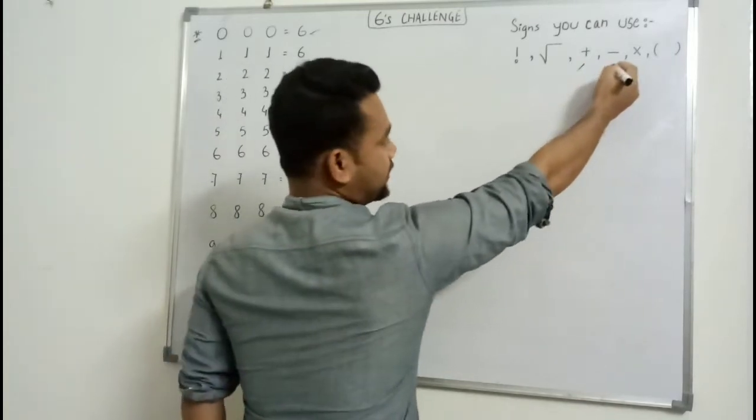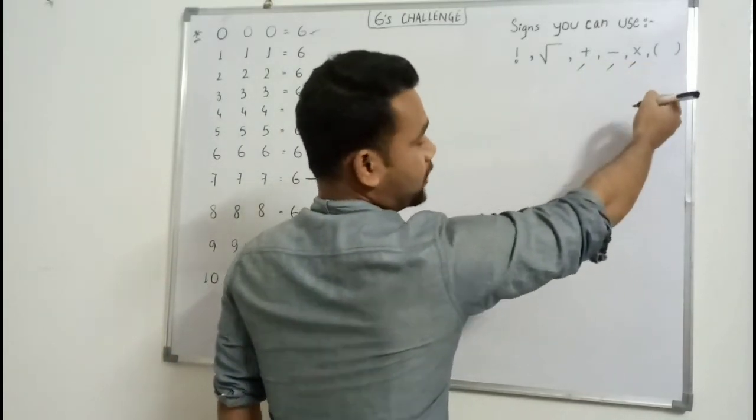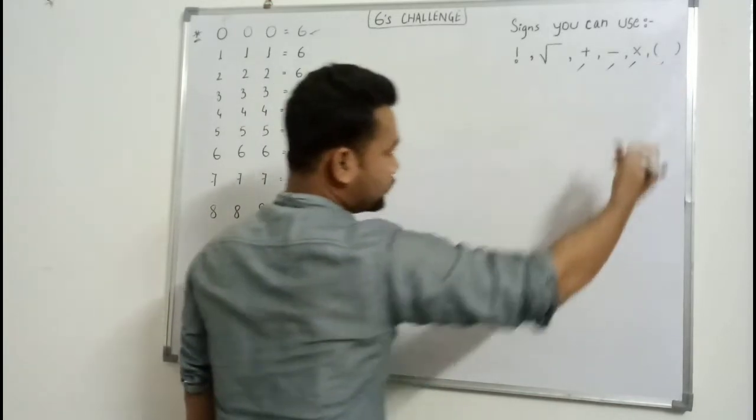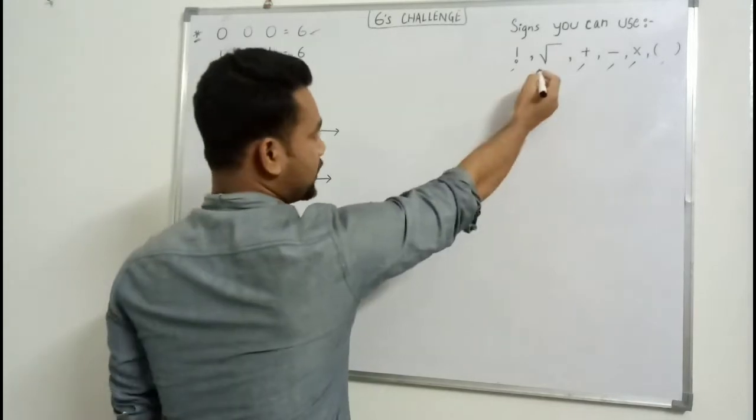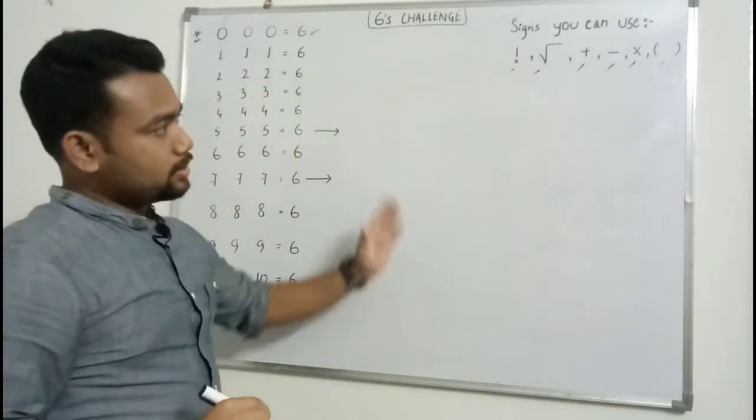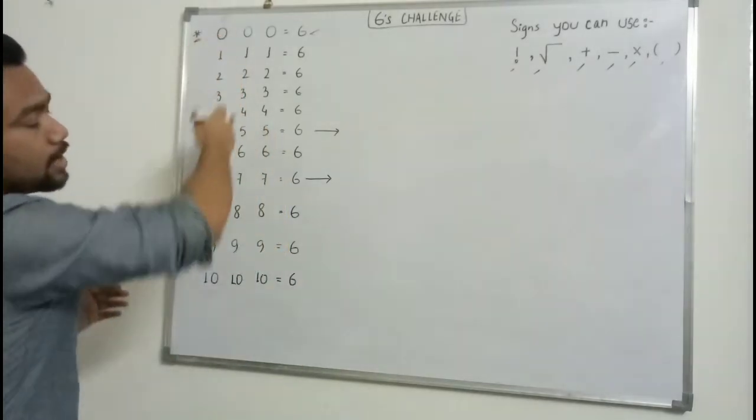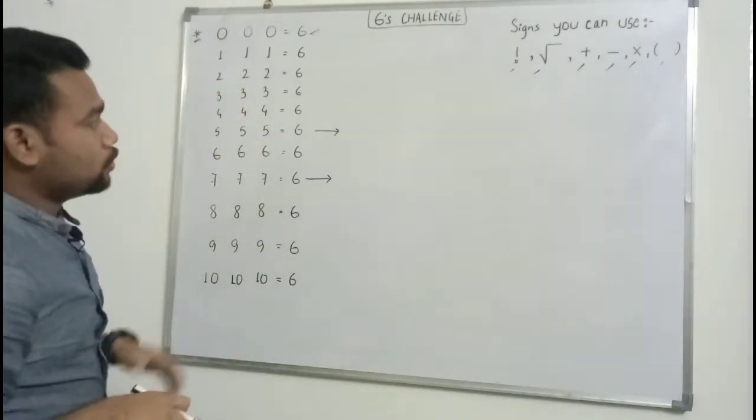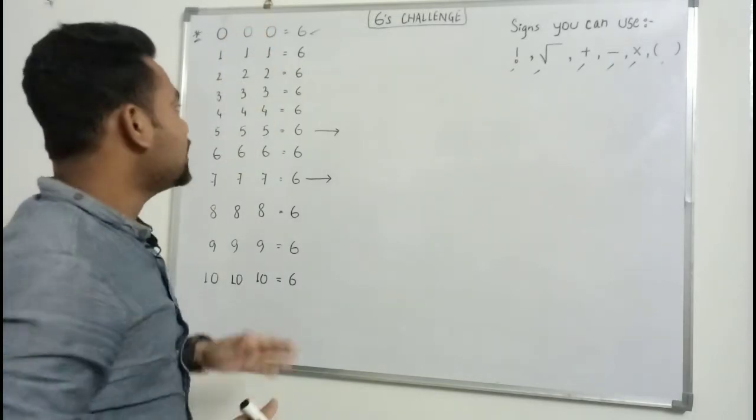Subtraction, multiplication sign can be used, brackets can be used, factorial sign can be used, and most importantly square root can be used. These are the six factors that can be used between these numbers to get the value six.